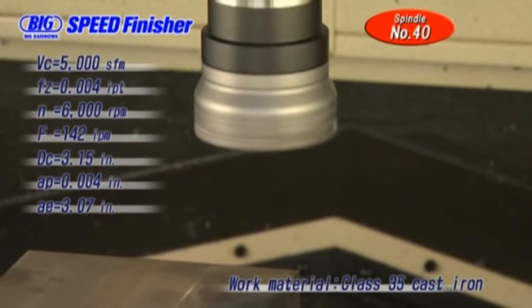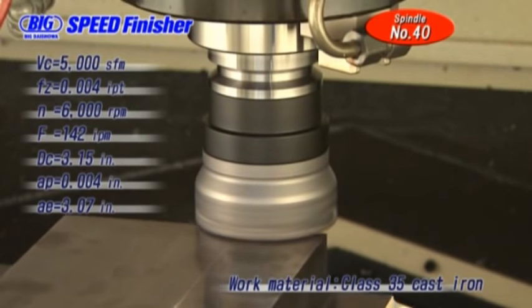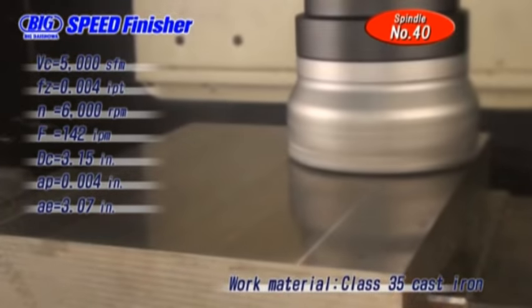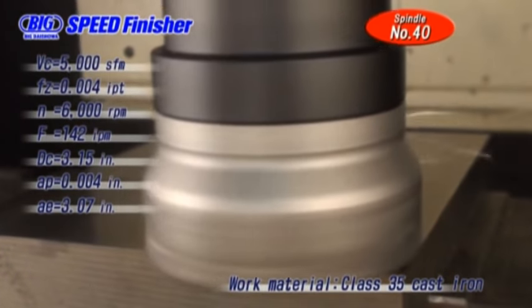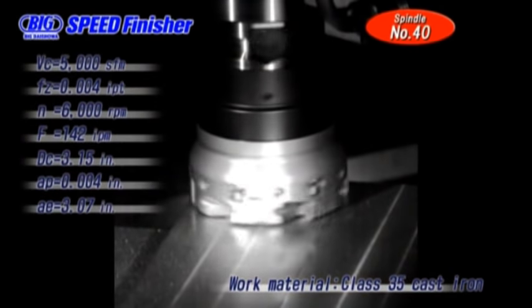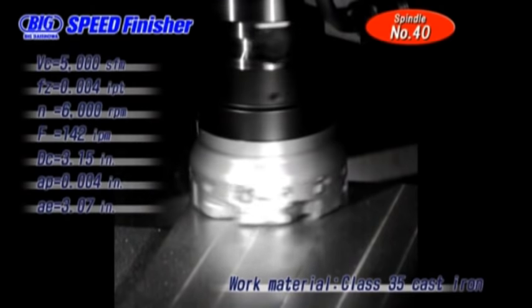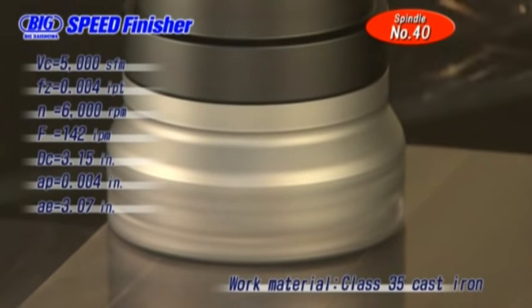Next, we use a machining center with a Big Plus BT-40 taper spindle. The work material is Class 35 cast iron. The cutting speed is 5,000 feet per minute. The feed rate is 0.004 inch per tooth with an axial depth of cut of 0.004 inch.